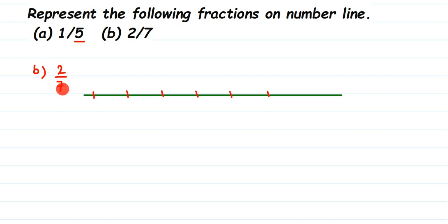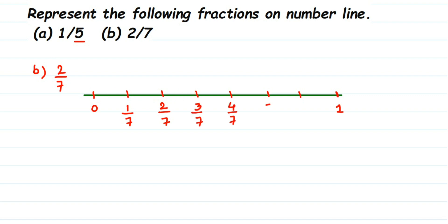So I'm going to make 7 equal parts here because the denominator is 7. Suppose this is my 0. I have already made 5 equal parts — 1, 2, 3, 4, 5 — so I have to make 2 more: this will become 6 and this will become 7, and this will become my 1. Now I have to write the fractions: first one will be 1 by 7, this will become 2 by 7, 3 by 7, 4 by 7, 5 by 7, 6 by 7, and the last one will be 7 by 7, which equals 1. And what we have to plot? We have to plot 2 by 7, which is right here on the number line.